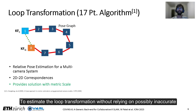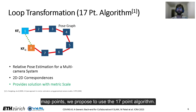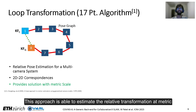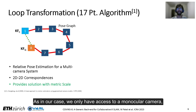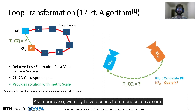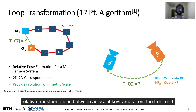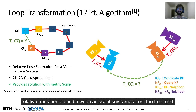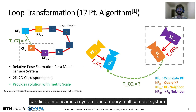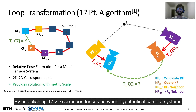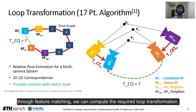To estimate the loop transformation without relying on possibly inaccurate map points, we propose to use the 17-point algorithm. This approach is able to estimate the relative transformation at metric scale using only 2D image correspondences between two multi-camera systems. As in our case we only have access to a monocular camera, we propose to leverage the estimated relative transformations between adjacent keyframes from the frontend. Essentially, using the neighboring keyframes, we build a hypothetical candidate multi-camera system and a query multi-camera system. By establishing 17 2D correspondences between these hypothetical camera systems through feature matching, we can compute the required loop transformation.